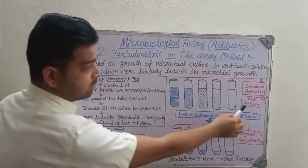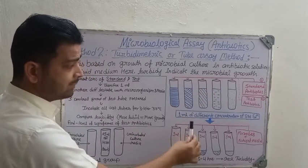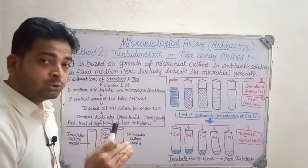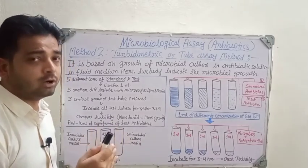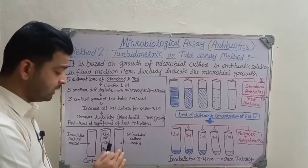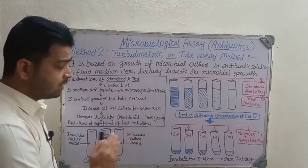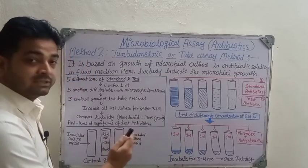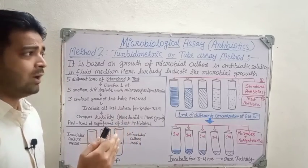Then we find the level of significance of the test antibiotic. The standard antibiotic should show less turbidity, indicating it inhibited microbial growth. The test antibiotic may be near to the standard or it may not be — and we compare both against the control groups. The control groups tell us where maximum growth occurs and where there is no growth at all.